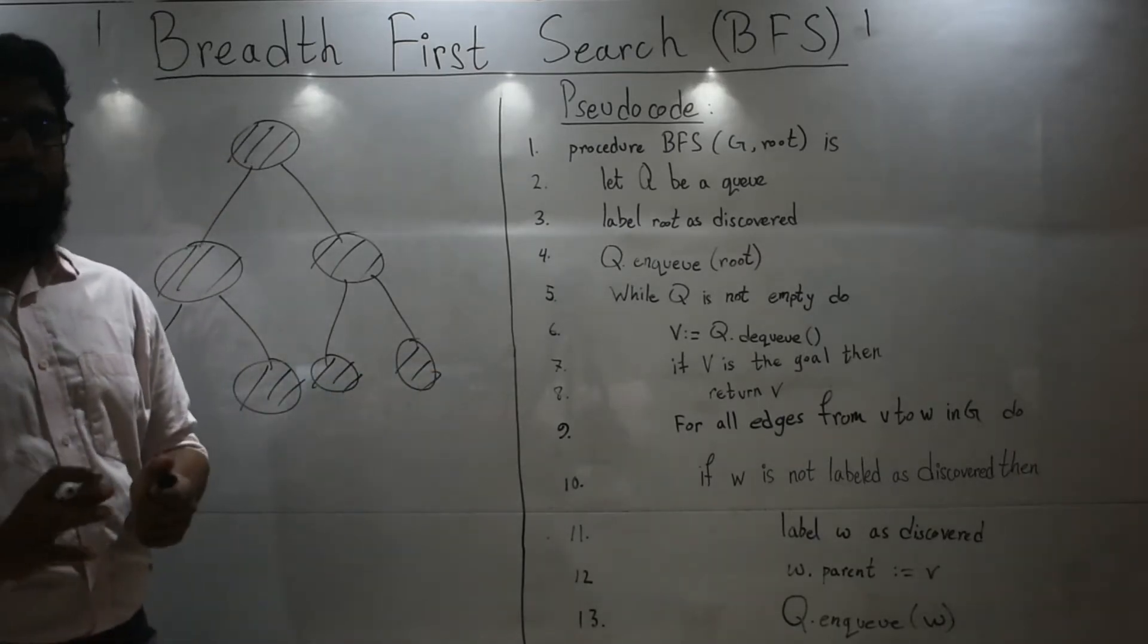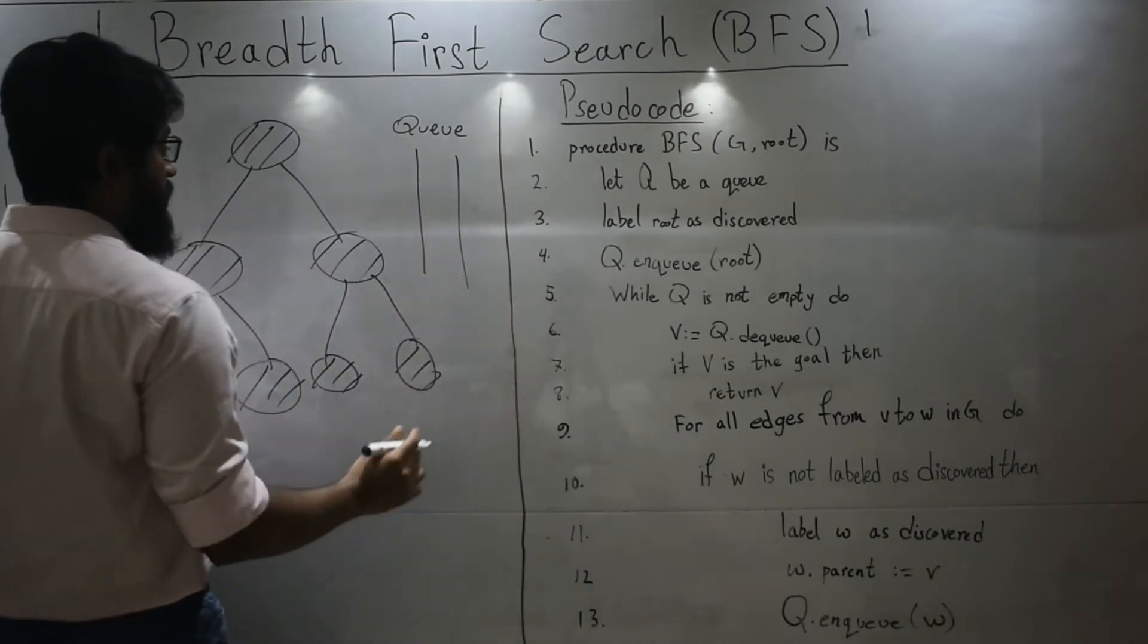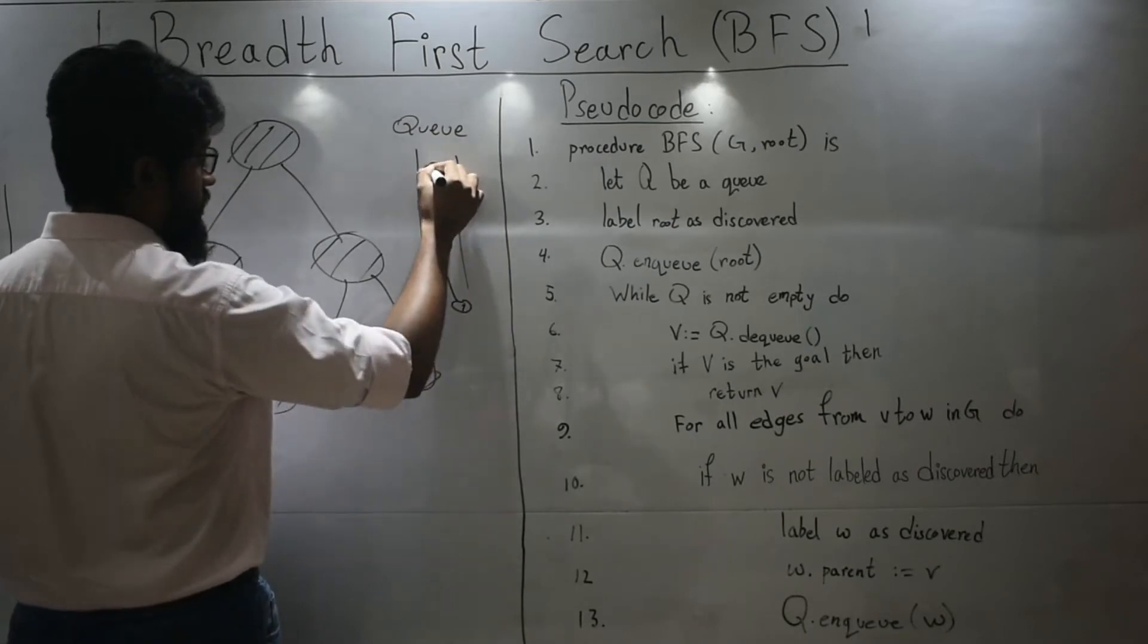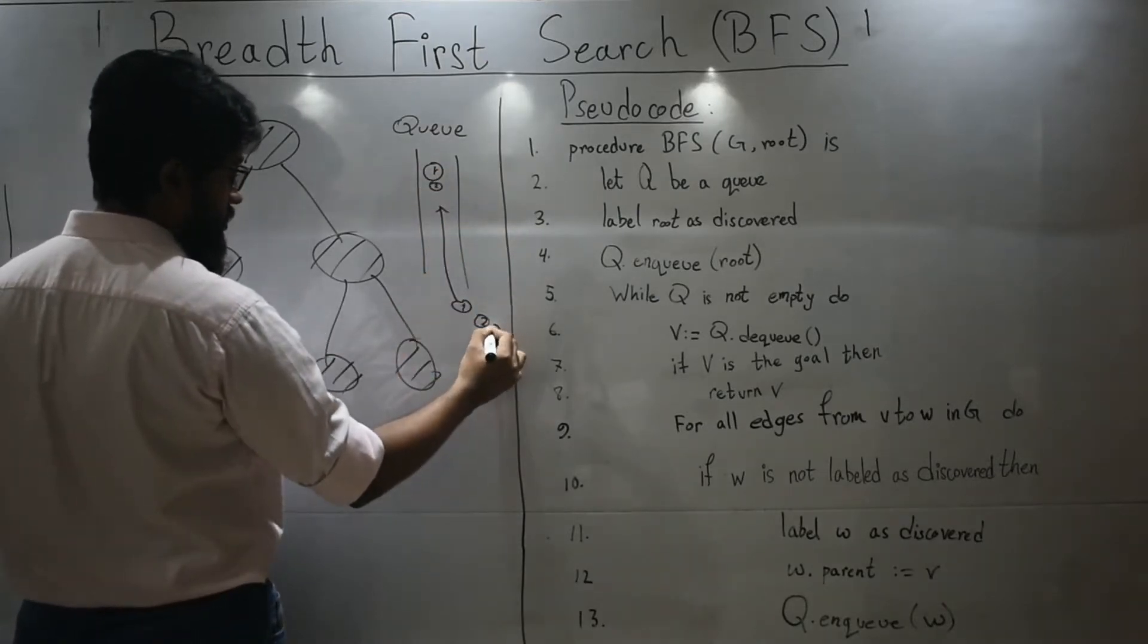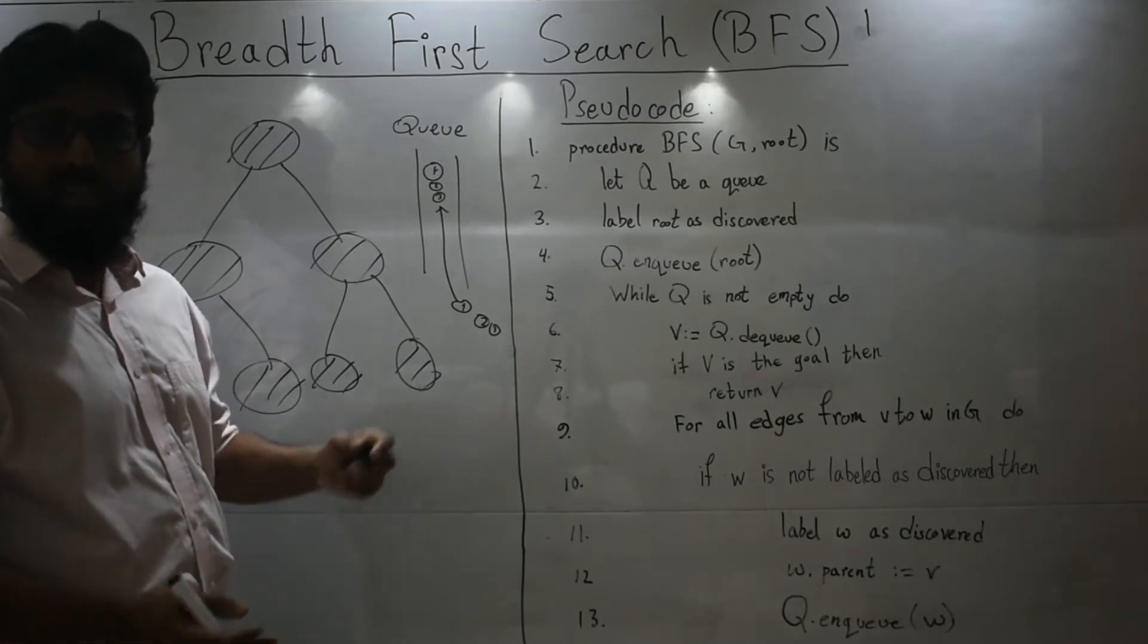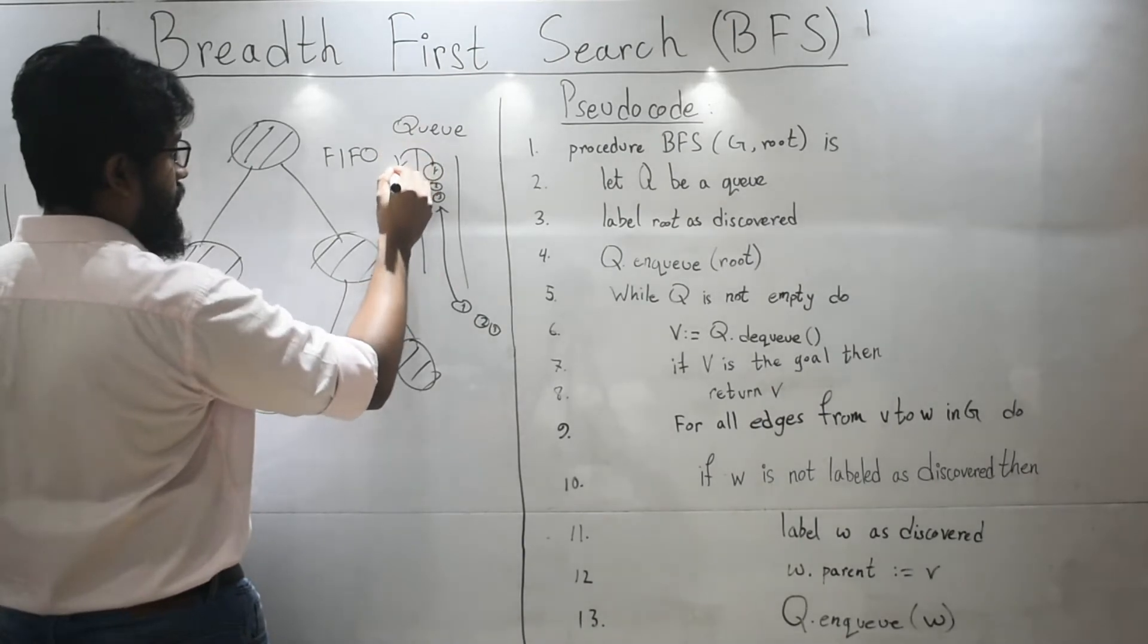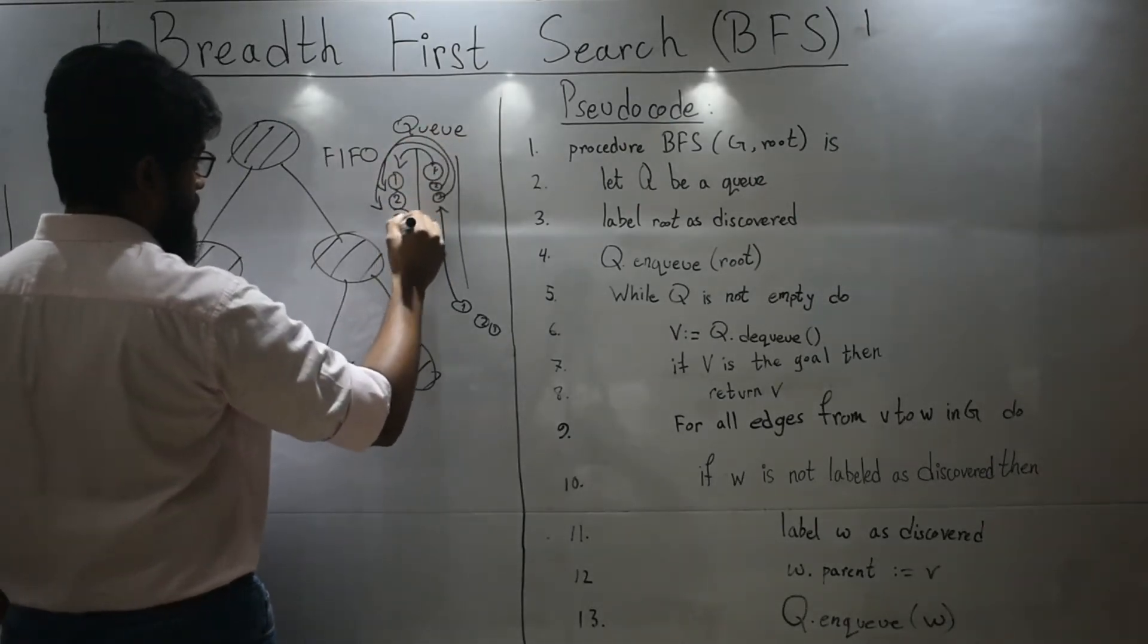So for this what we use is a queue. So what is a queue? It's simply like a serial. Anything we want to put in the queue, we enqueue them. Suppose this is one, two, three. Anything that we want to take out from the queue, we dequeue them, and we will see that it follows a first in first out rule, FIFO. So we dequeue them, one, two, three.